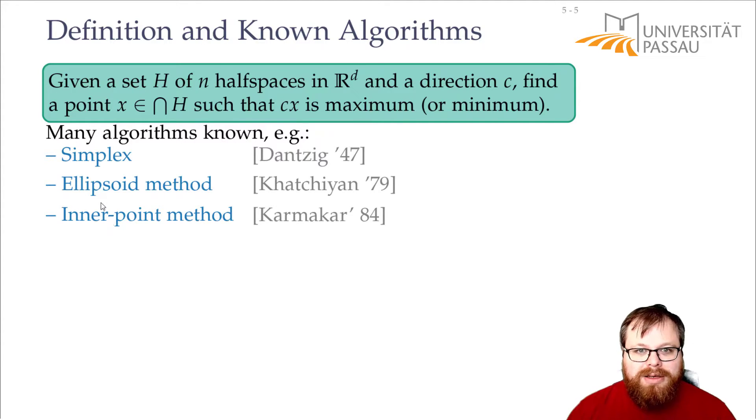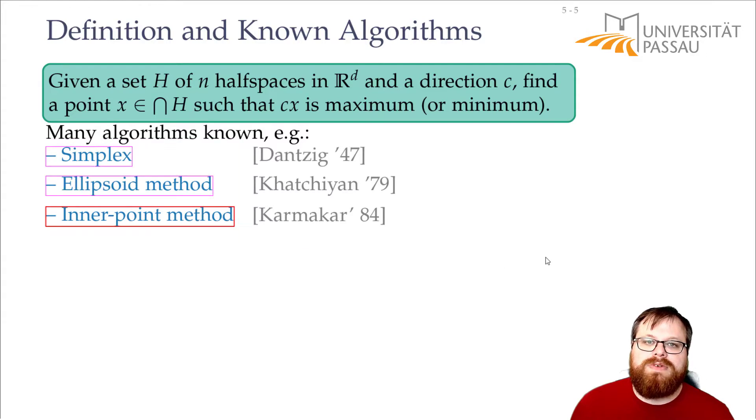Then there has been a lot of more improvement and by now the best known running time is order of n to the time you need for matrix multiplication which is 2.36 something currently I think. But those are not really usable in practice. In practice you usually have something of these with some heuristics that improve it.